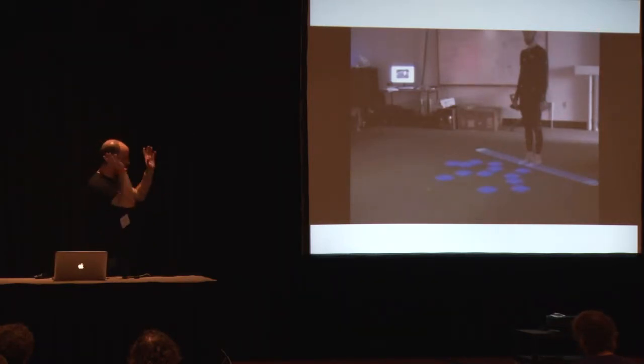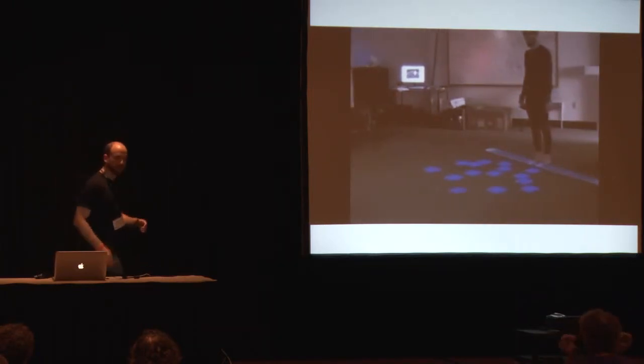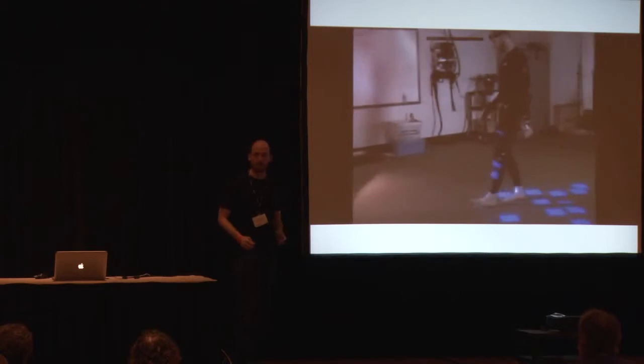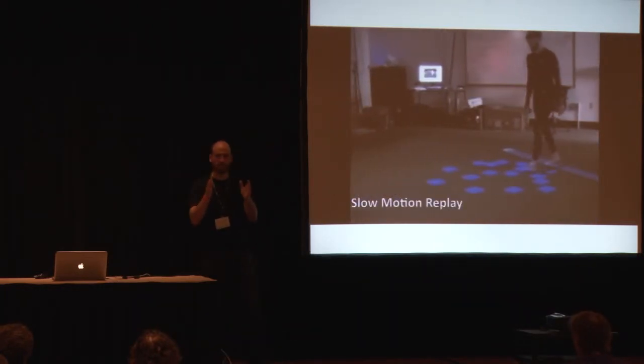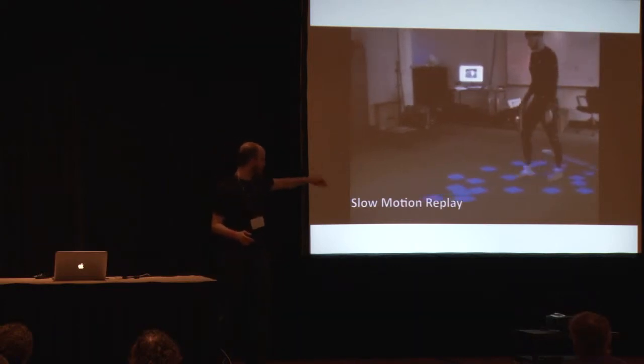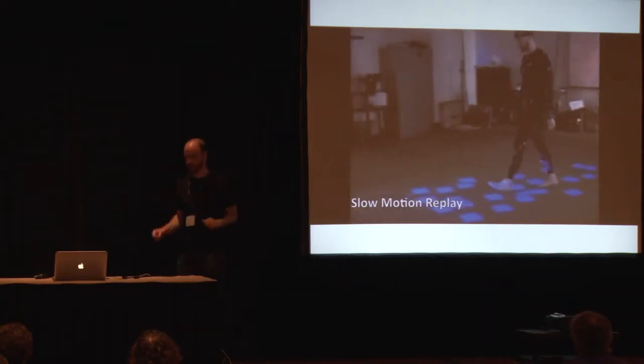People did the same task, except now I told the projector to only display obstacles when they're within a certain distance of the subject's position as they walk through the room. People did this task in a variety of these different visibility windows. At the largest they could see five step lengths ahead of them, and the smallest they could only see one step length in advance.